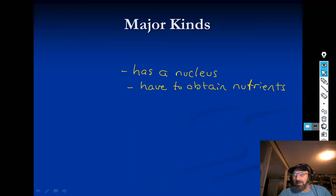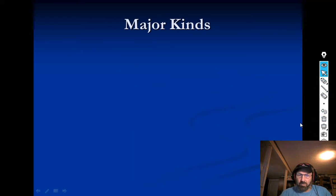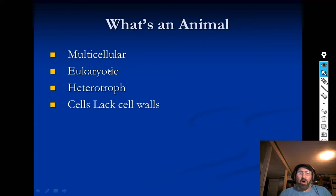So that's really what an animal is. All animals are multicellular, eukaryotic, heterotrophic, and lack cell walls. Those are really important characteristics for animals.